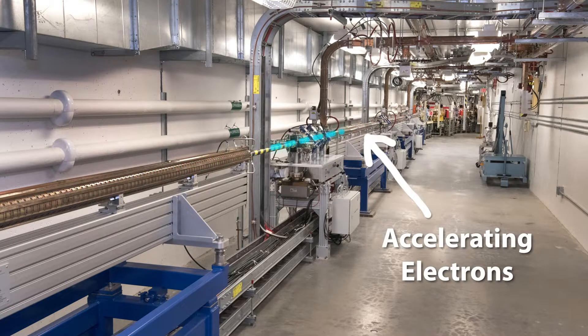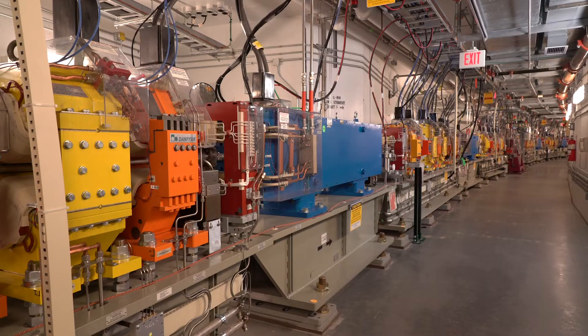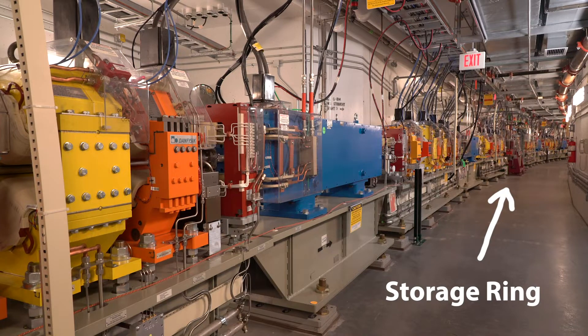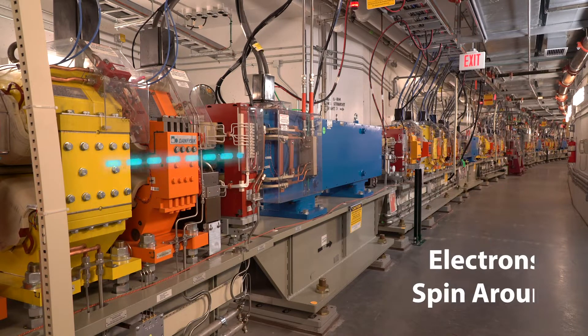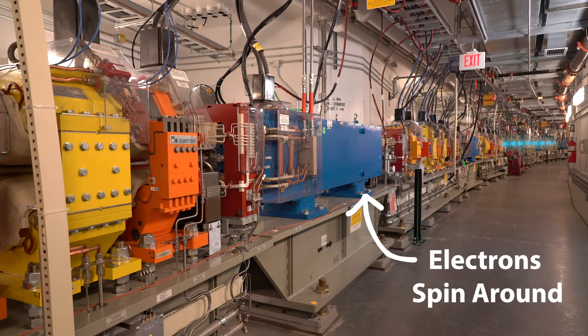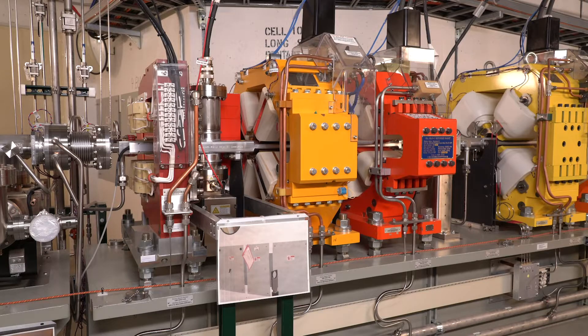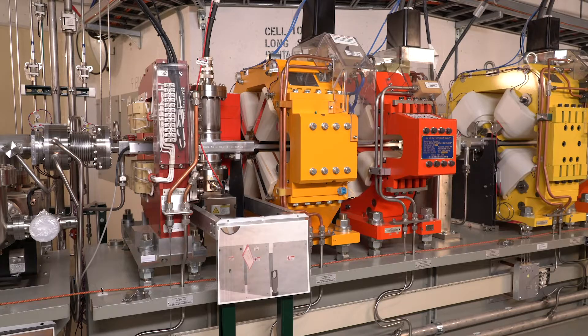We take those electrons and we accelerate them in a linear accelerator. Once they get up to about the speed of light we put them into what we call the synchrotron ring and the synchrotron ring is a storage ring for the electrons where we spin them around in a circular orbit.